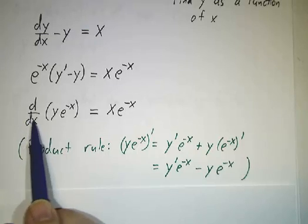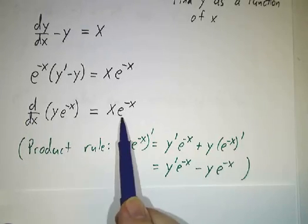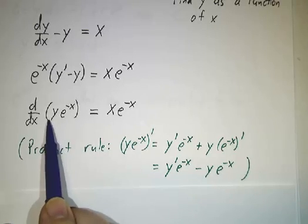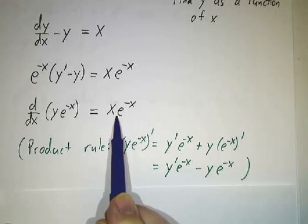So we've got the derivative of ye^(-x) equals xe^(-x). Well, that means that this must be the antiderivative of this.